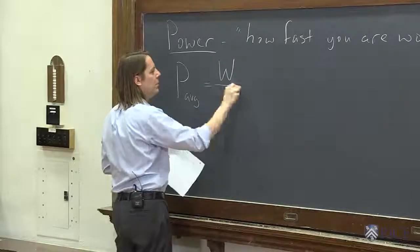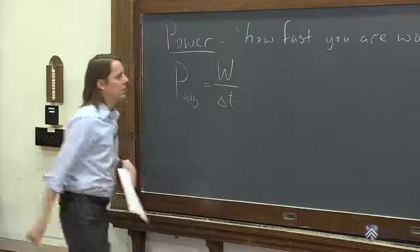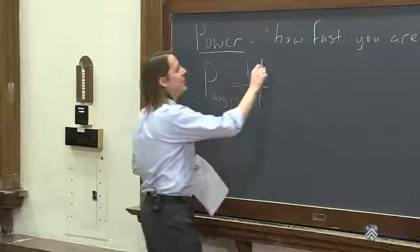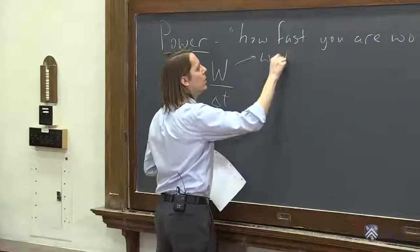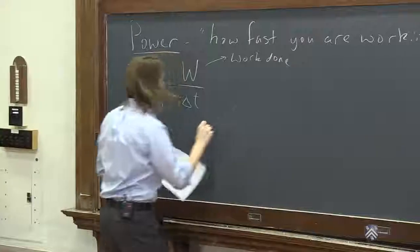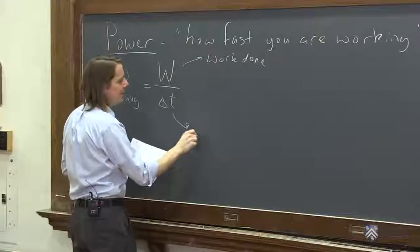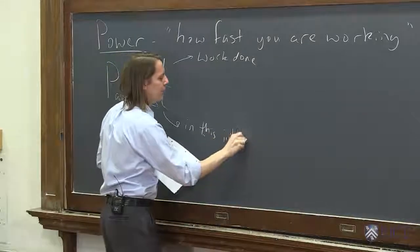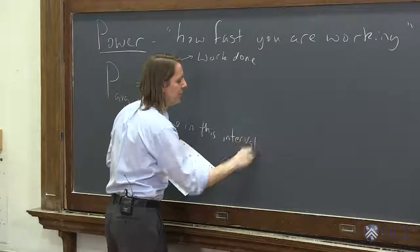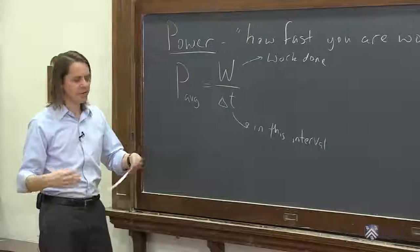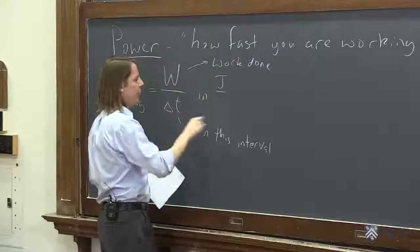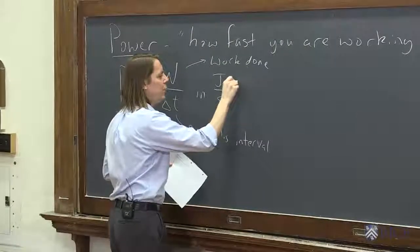The average power is W over delta T, where this is the work done in this interval. So if you do a certain amount of work in a certain amount of time, that ratio is just the power. And it's in joules per second, which is equal to a watt.